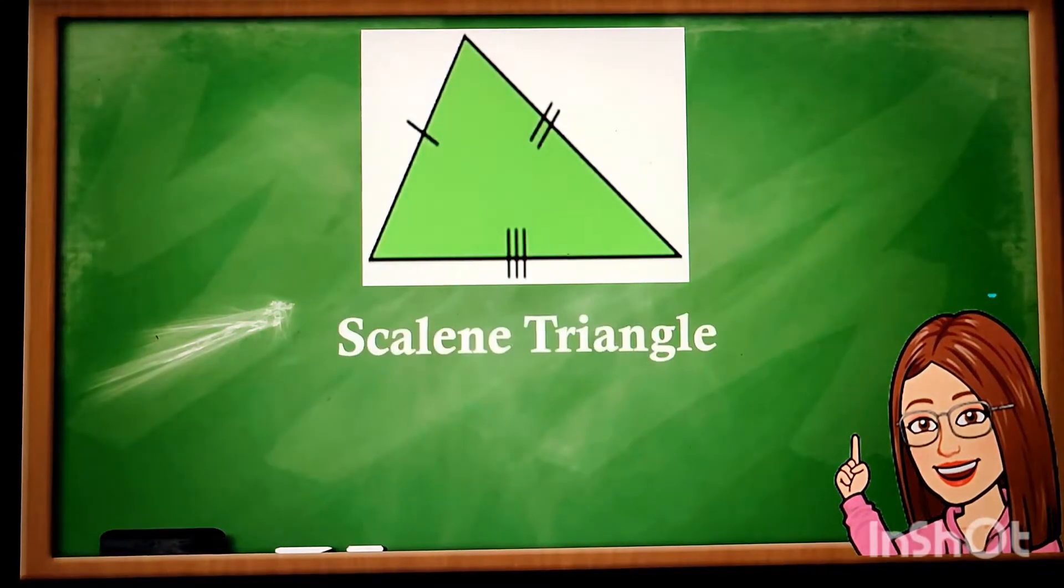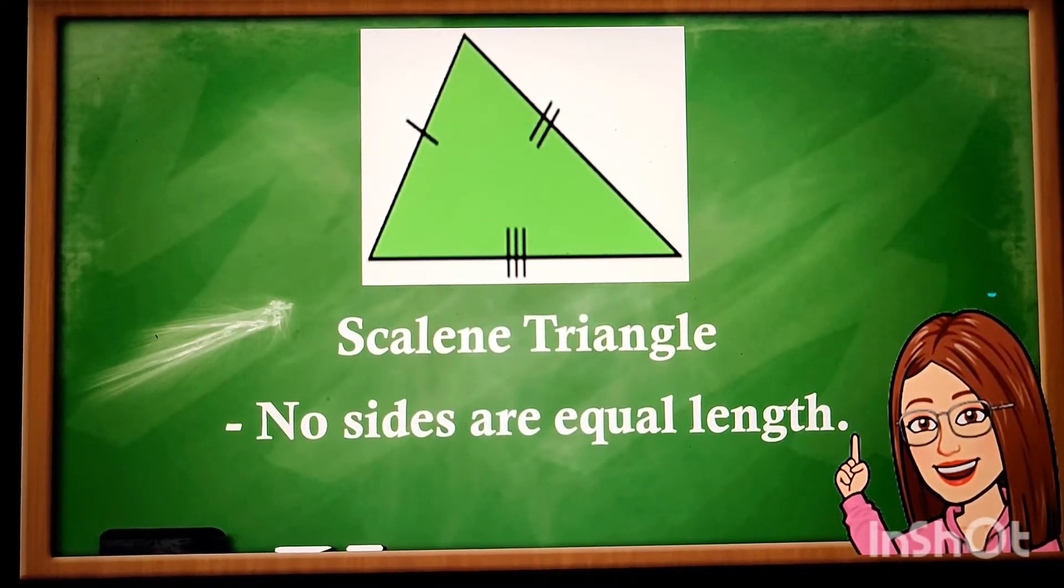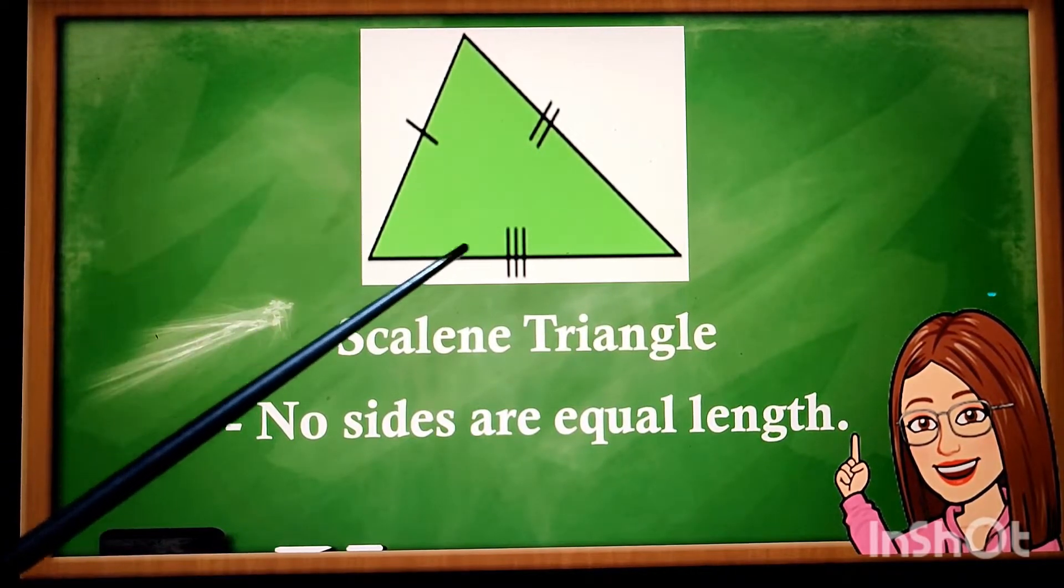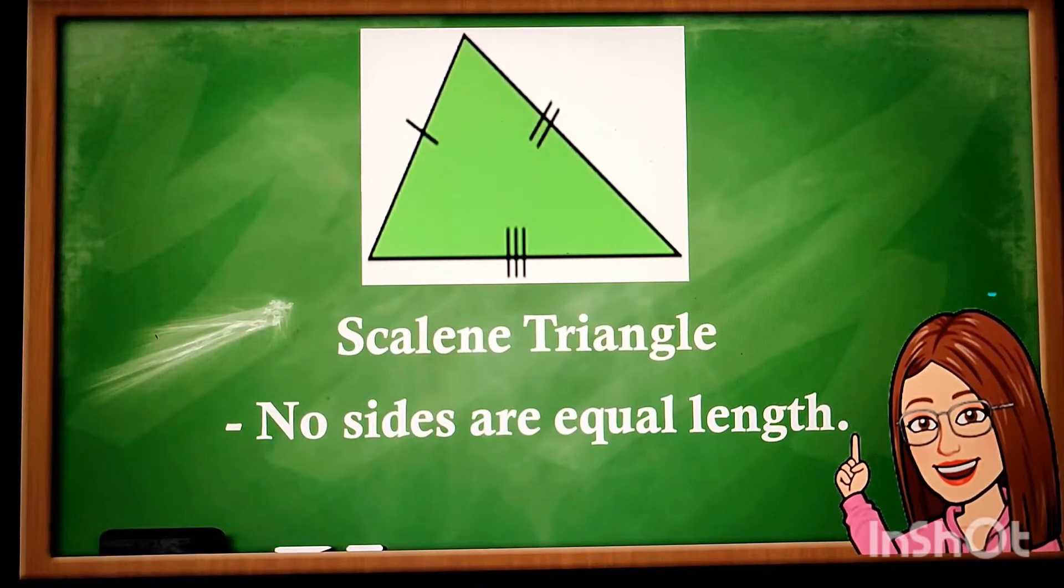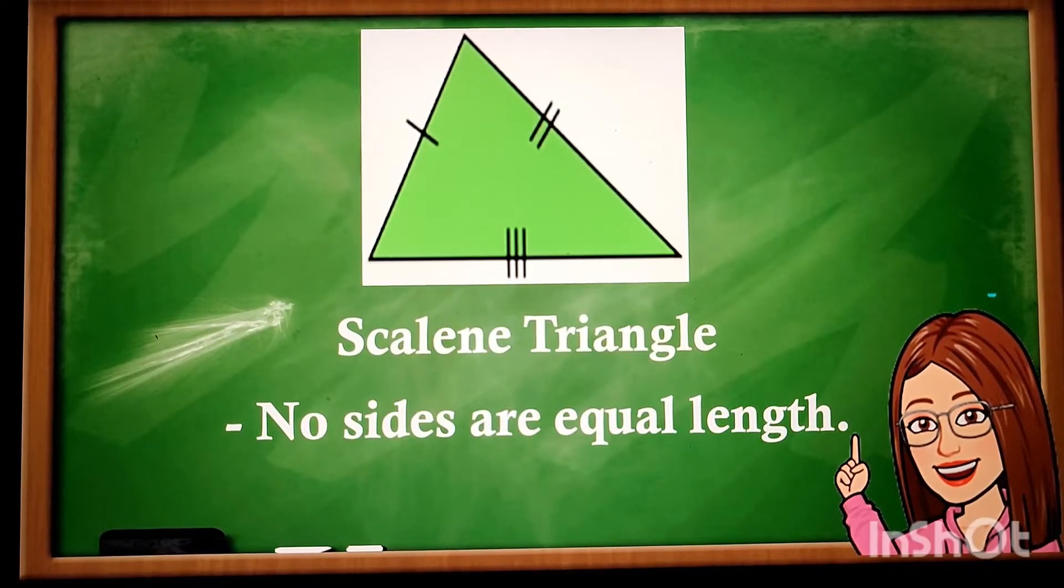Next we have scalene triangle. No sides are equal length. 1, 2, 3 sides, there is no equal length. They have different lengths.